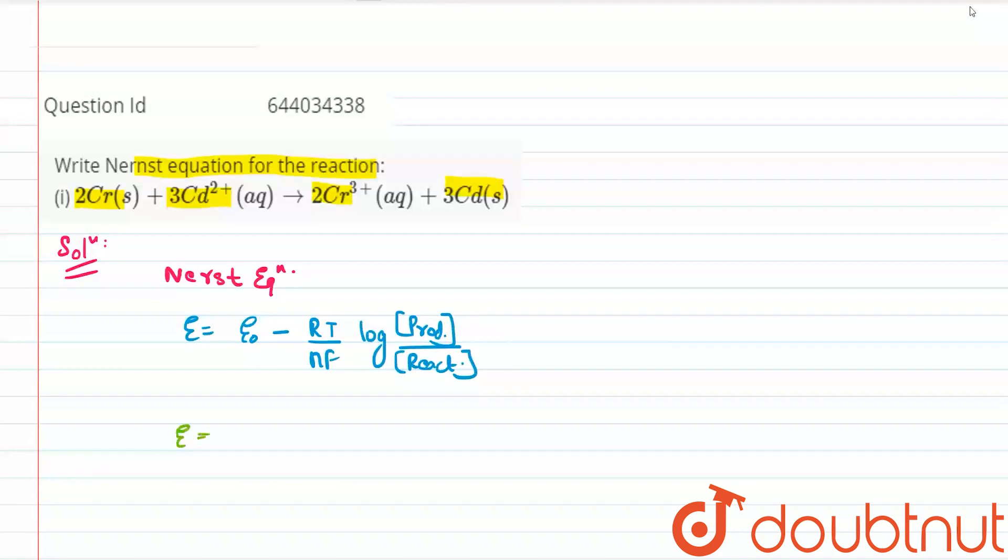On further solving, we get E equals E naught minus, this RT by NF generally at standard temperature comes out to be 0.059 divided by N into log of products.